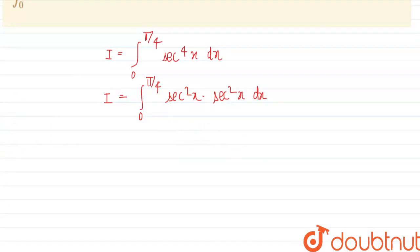And we know that 1 plus tan square theta is sec square theta. This is identity.